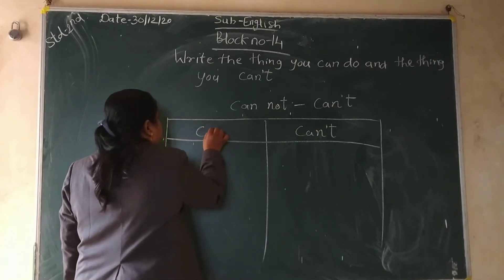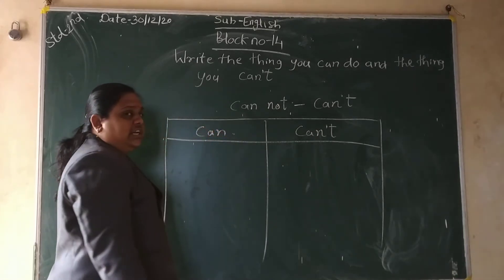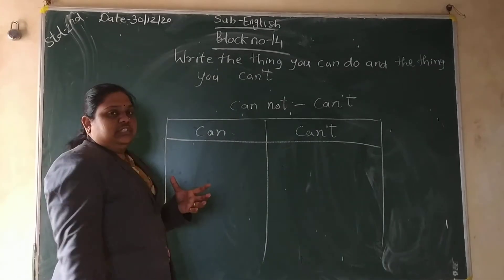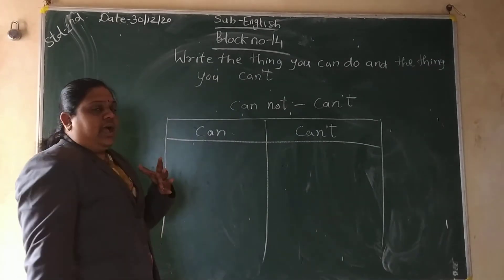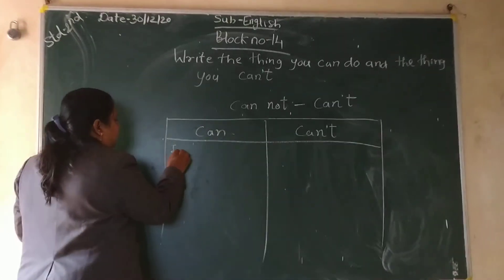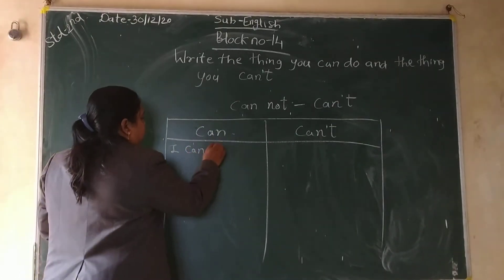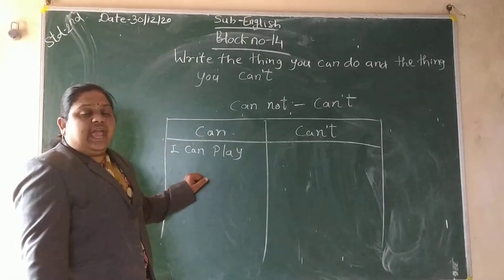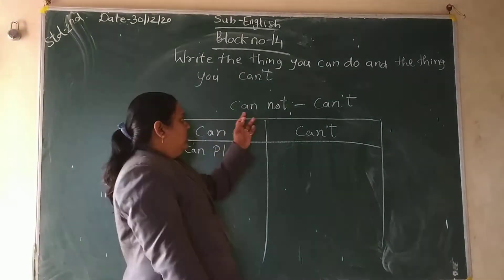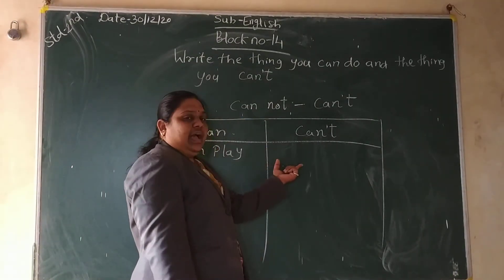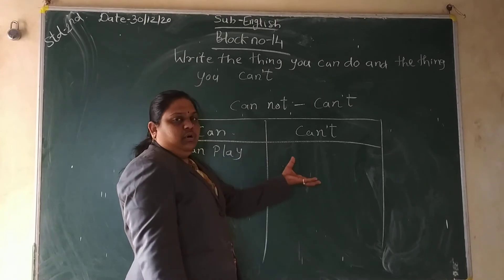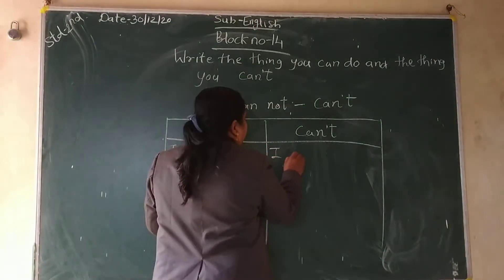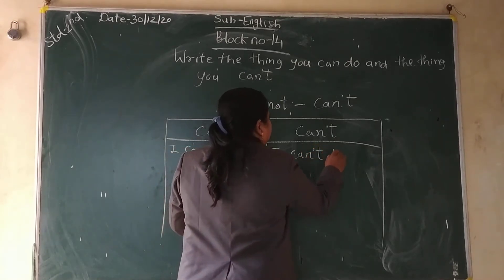We will see the sentences of can and can't. So see what is the first sentence: I can play. When you are using the negative here — I cannot — that is the long form. But we can write it in a short form: I can't play.